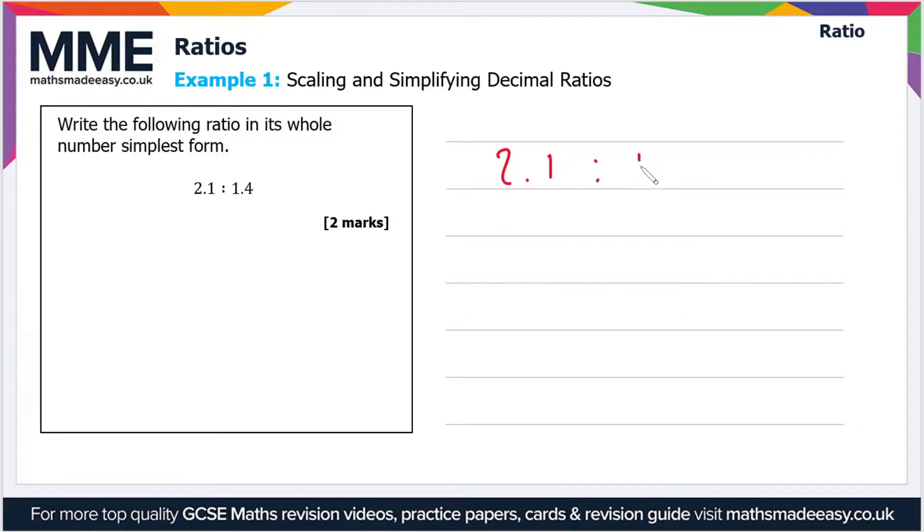So first of all what we can do, let's just rewrite the ratio here: 2.1 to 1.4. Let's multiply both sides by 10, so that leaves us with 21 to 14.